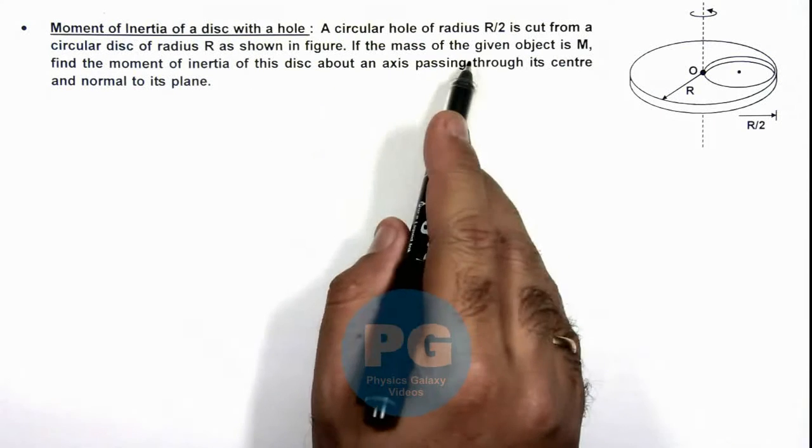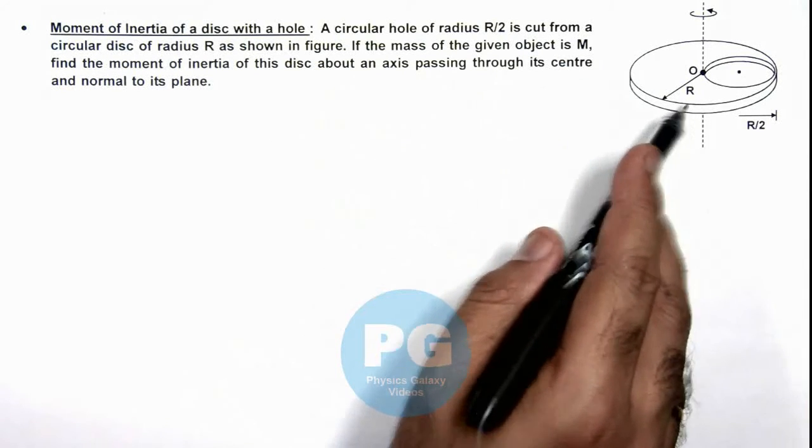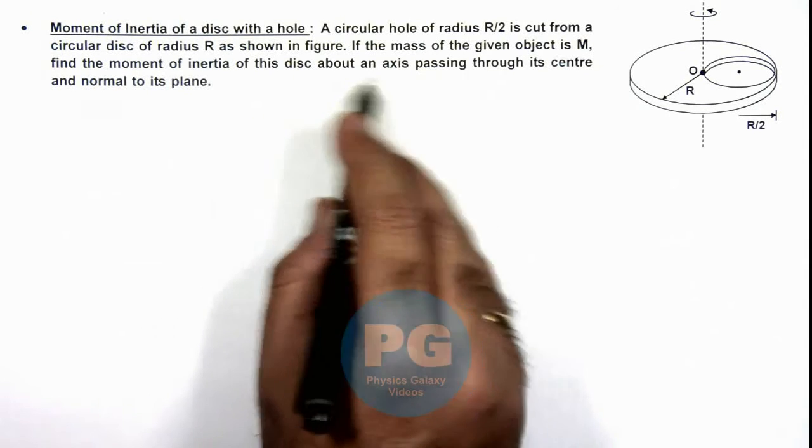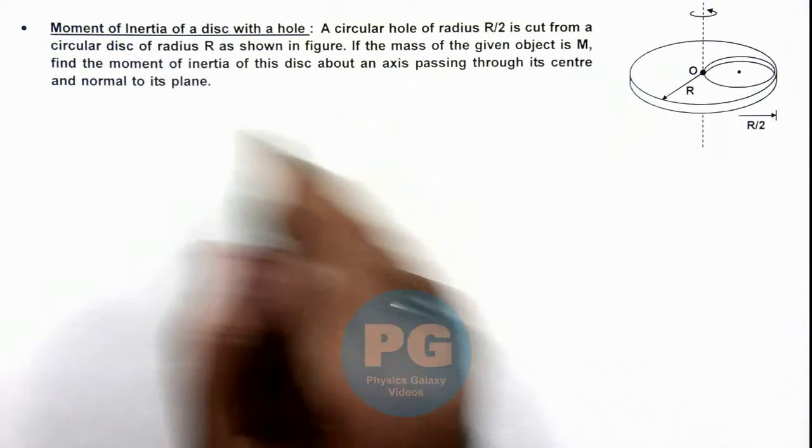If the mass of the given object is M, we are required to find the moment of inertia of this disc about an axis passing through the center and normal to this plane.